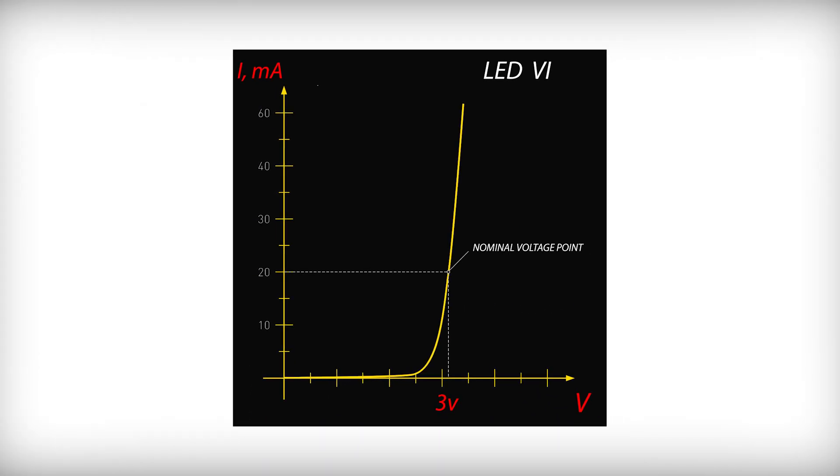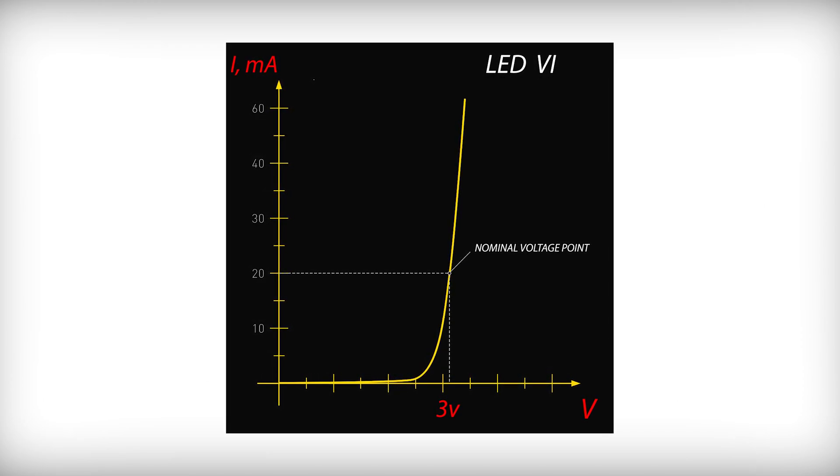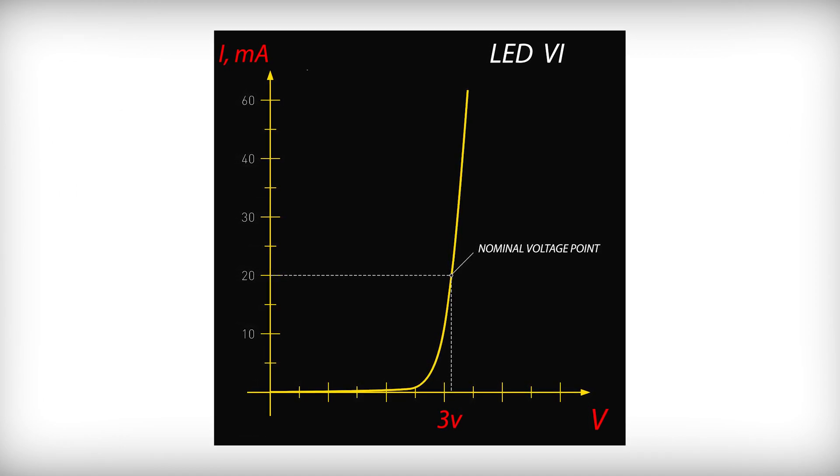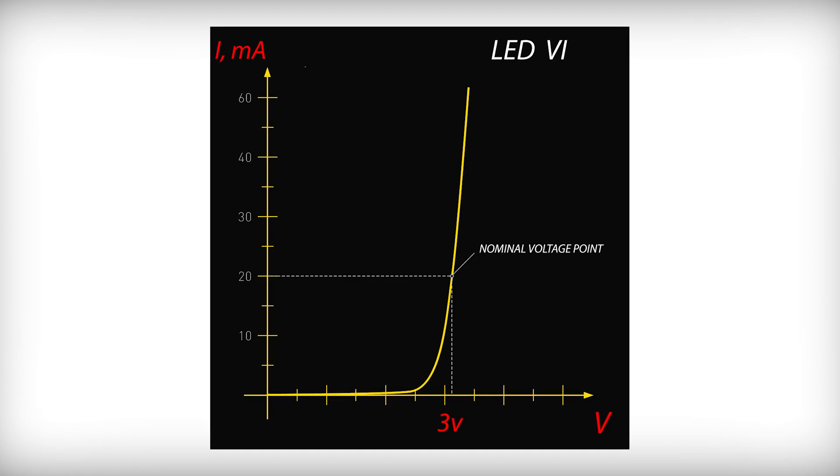The relation between current flowing through a load and voltage across this load is called the VI characteristic. A diode is a semiconductor device with a non-linear VI. As the supply voltage increases, the LED's resistance drops, which makes current increase much faster than voltage.